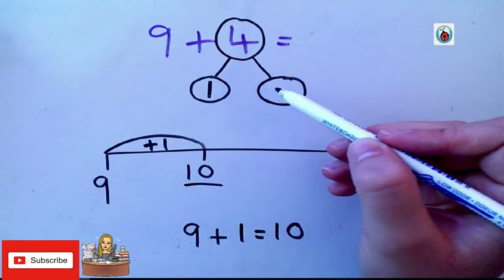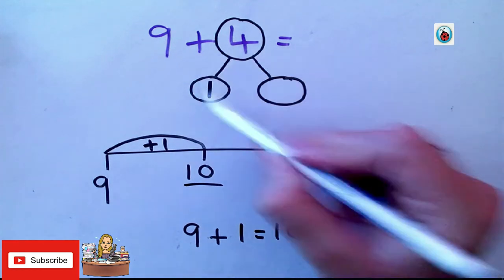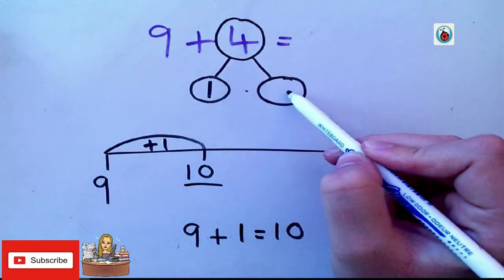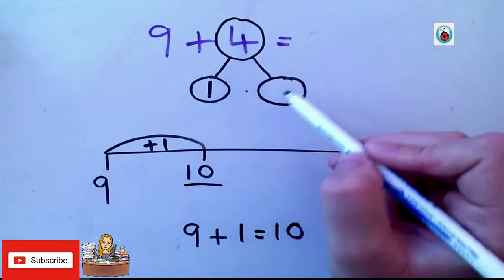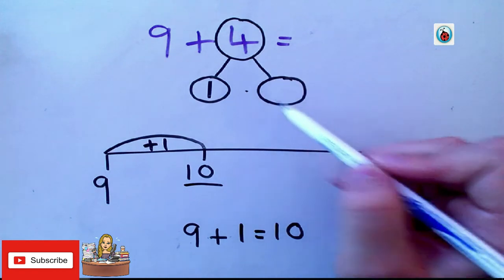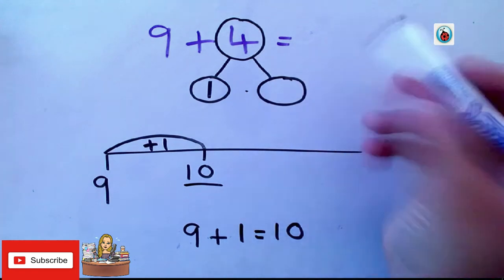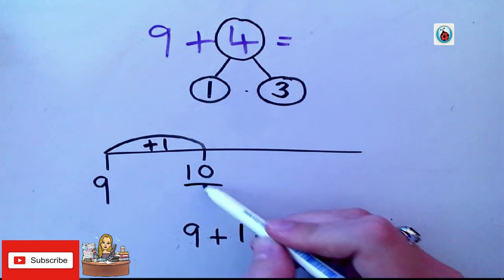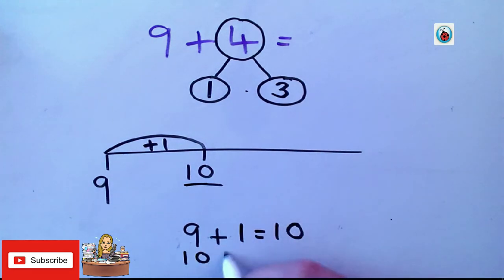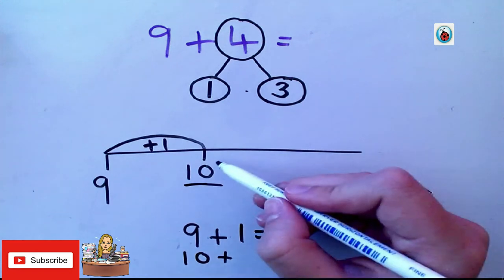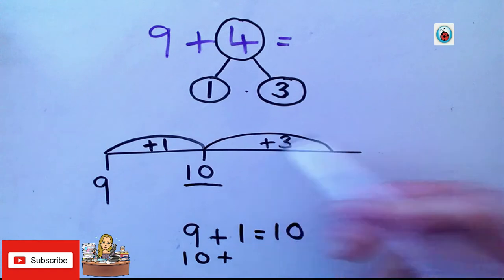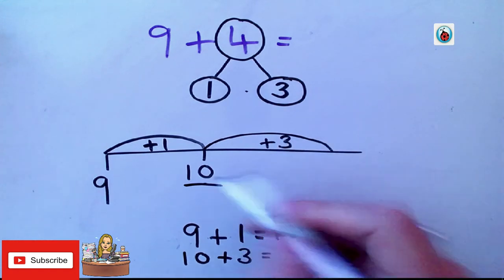What's my other number going to be? So, it's partitioned 4 into 1 add something is 4. What's my other number? 3. That's right. So, I've got 3. So, now, I'm on 10. So, I've got 10. Add what? 3. So, I'm going to add 3. So, what is 10 add 3?